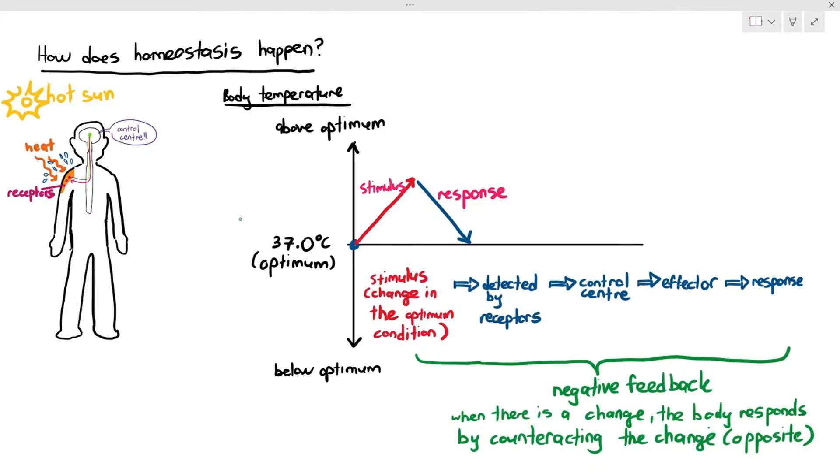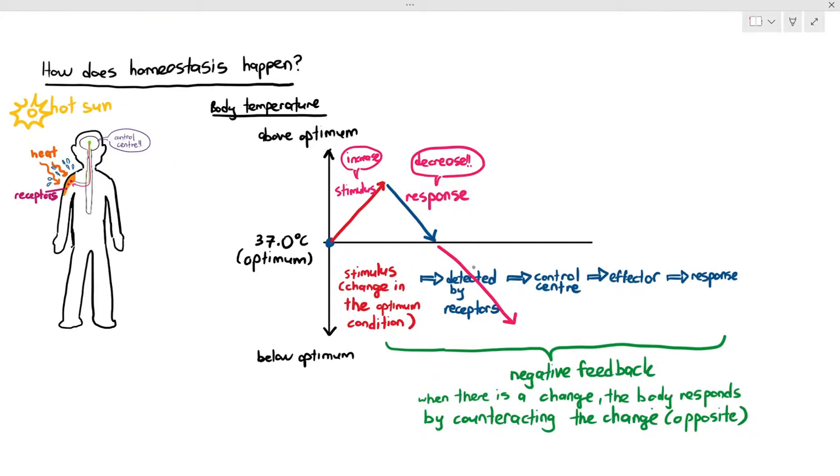Negative feedback can also be in the situation where, as an example, if your body temperature goes down, it will again still be detected. Let's say you jumped into cold water in the swimming pool. Make sure you know how to swim, by the way. So what happens is your body temperature goes down. So look at the stimulus, the pink arrow, it goes down.